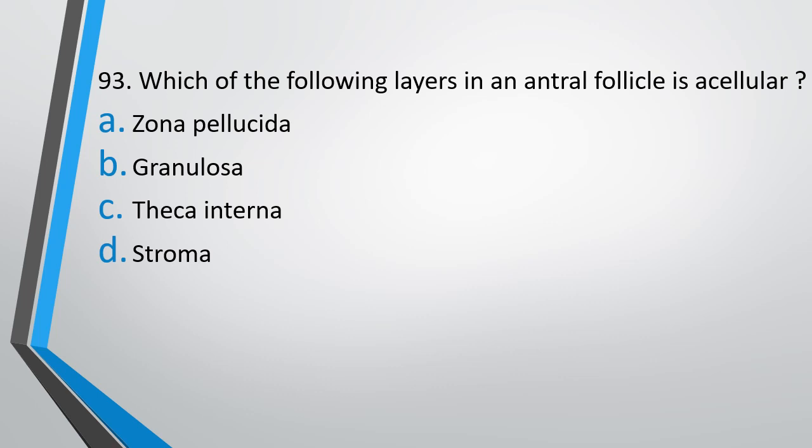Question number 93: Which of the following layers in an antral follicle is acellular? — Zona pellucida, granulosa, theca interna, or stroma. The correct answer is option A, Zona pellucida.